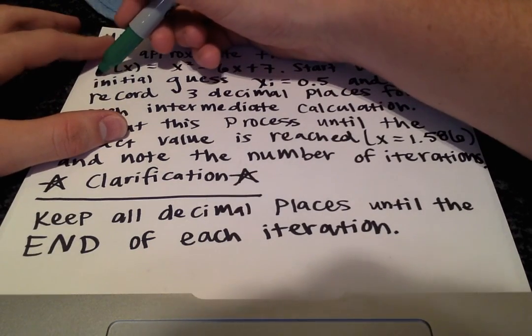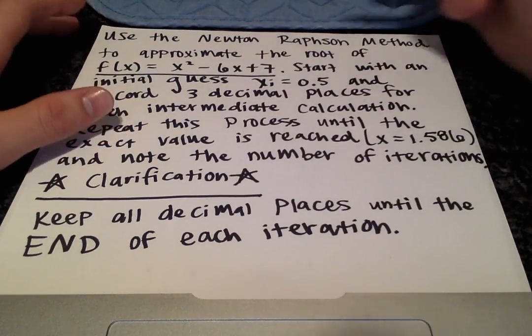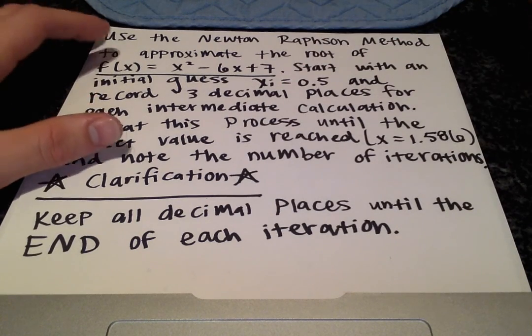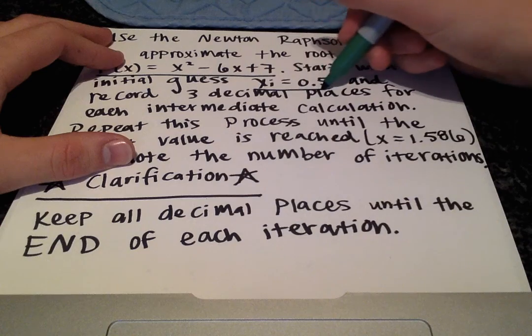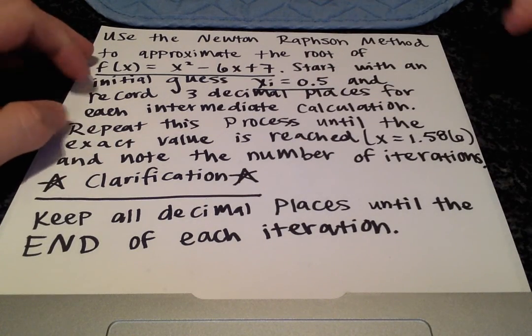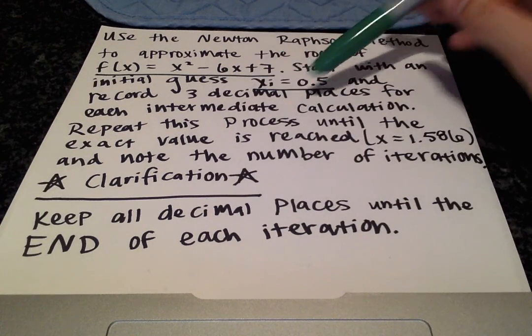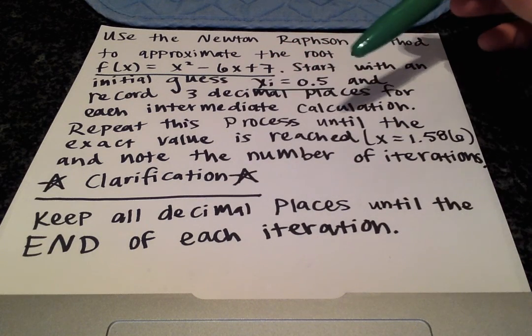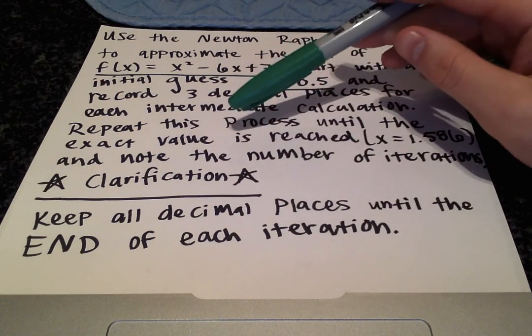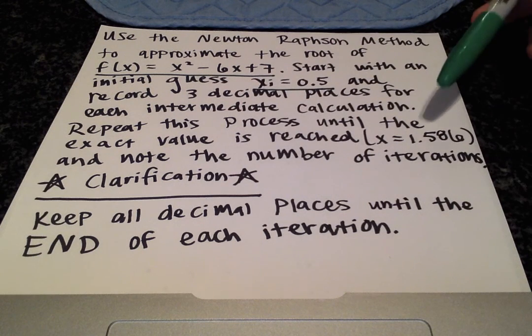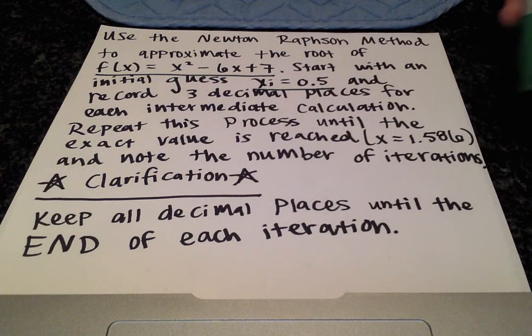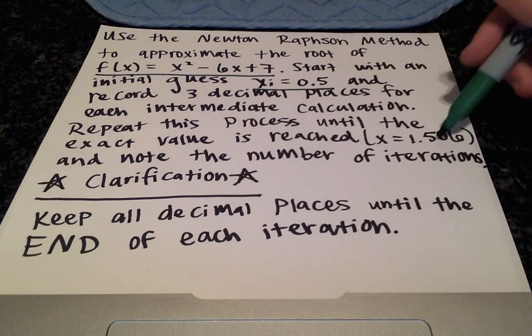So that's a pretty important piece of information. We need to know the function we're dealing with. And we also need to know our initial guess, which is 0.5 here. And we're also told to record three decimal places for each intermediate calculation. And we want to repeat this process until we get the exact value of the root, which is x equals 1.586, right up to three decimal places here.